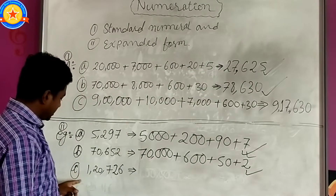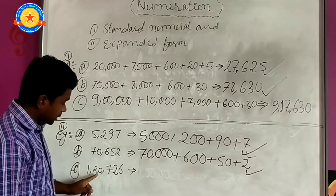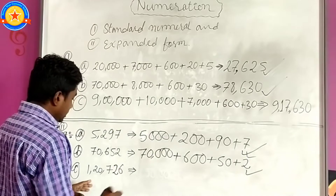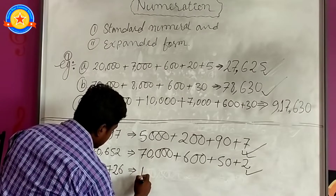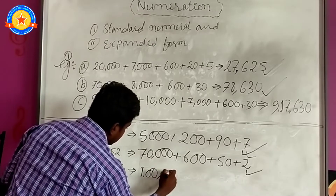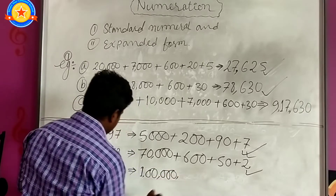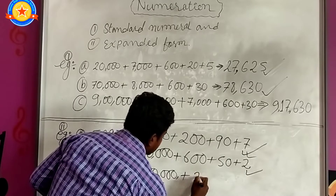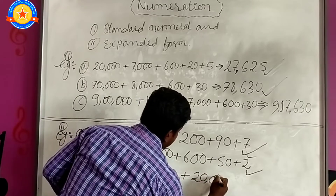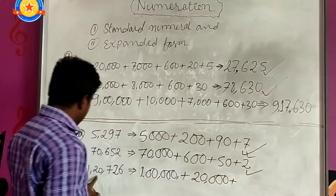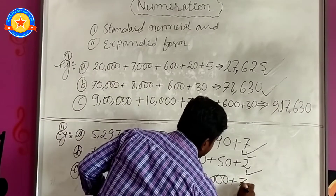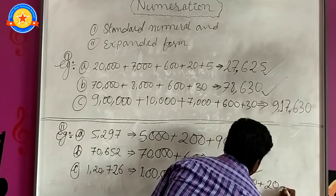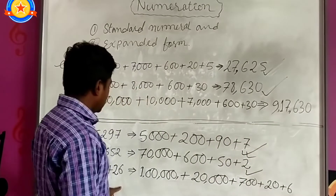Now let's do the last one. Number C: we have 1,20,726, and we have to expand this number. 1,000 — it will remain 1, triple zero, we get 1,000. Plus 20,000. Again we have 100, so 700. Again 26: 20 plus 6. This is the answer.